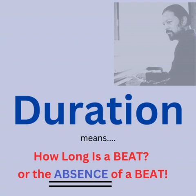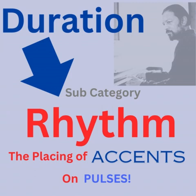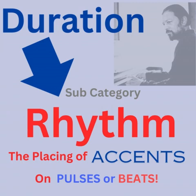Today we are going to focus on rhythm, which is a subcategory of duration. Rhythm happens when beats or pulses are accented in various ways. Accents are placed on beats to create accented beats, which are stressed or played louder than other beats in the bar.